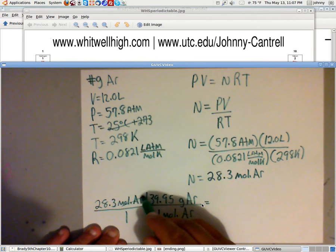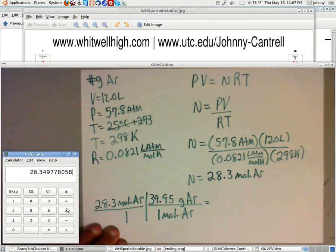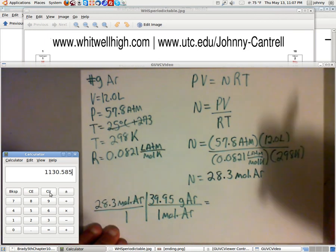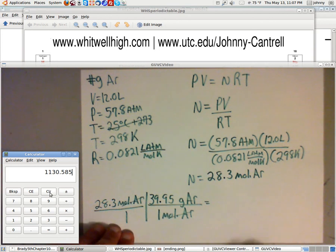Check this out. Moles of argon cancels out moles of argon. Now let's punch this on the calculator. So let's clear that out. So we've got 28.3 times 39.95. Now, we're still going to keep three sig figs, because this is pretty much like a constant came off the periodic table. And this is only three sig figs too.